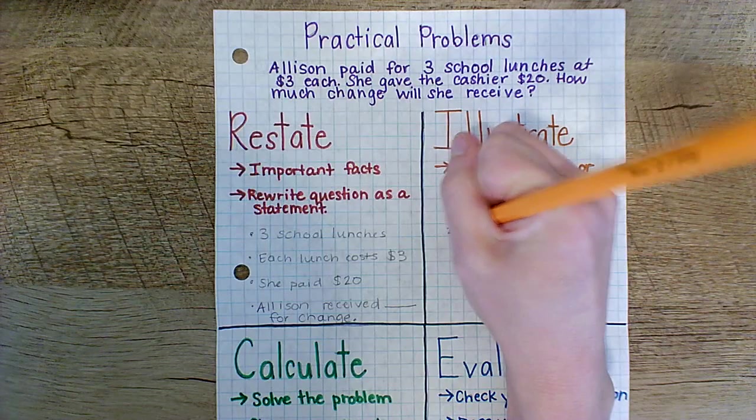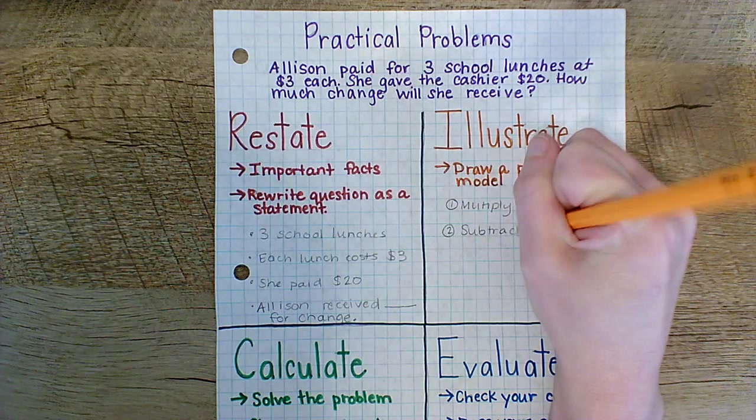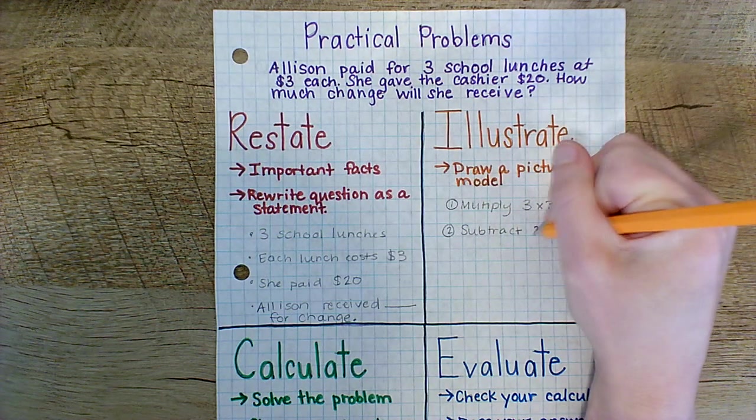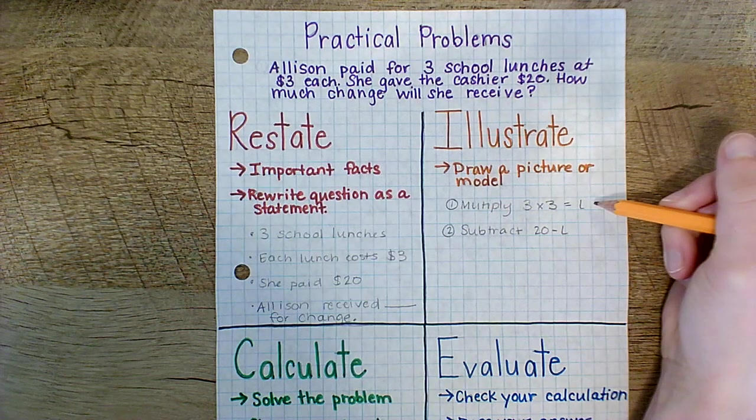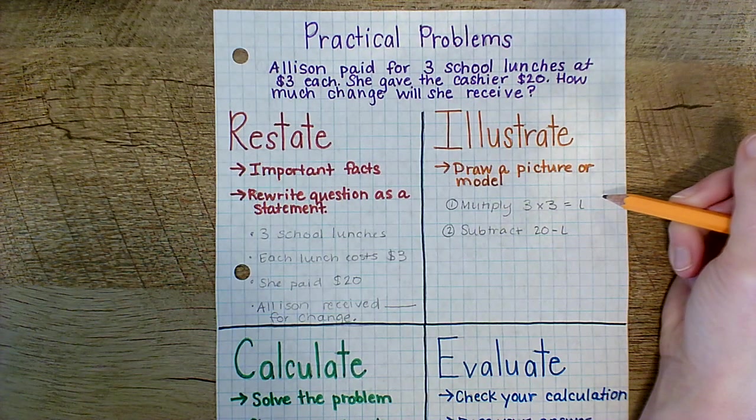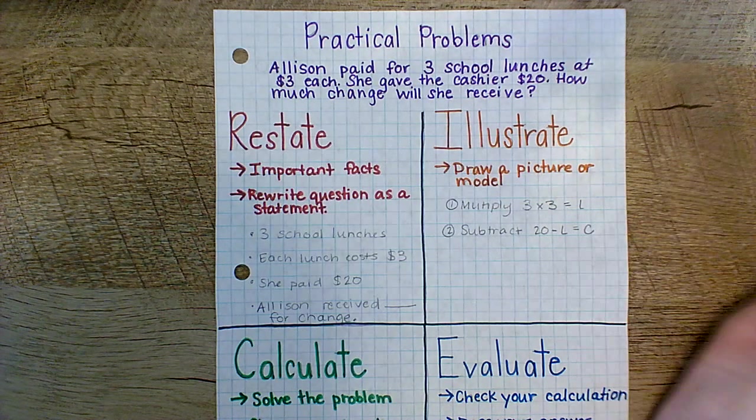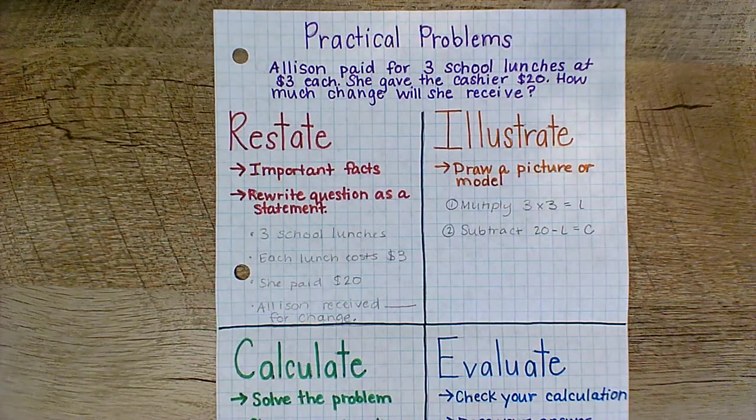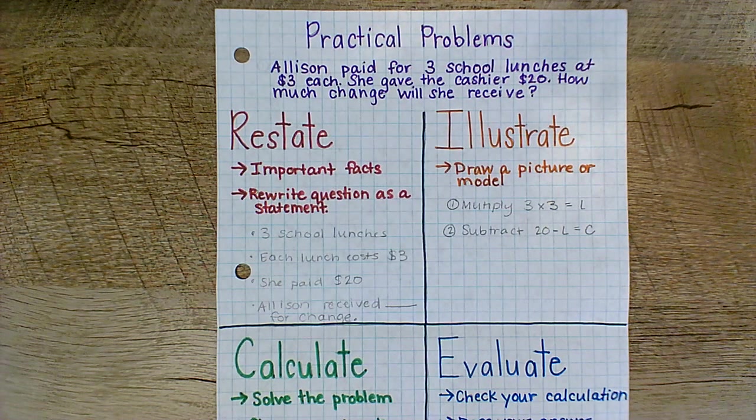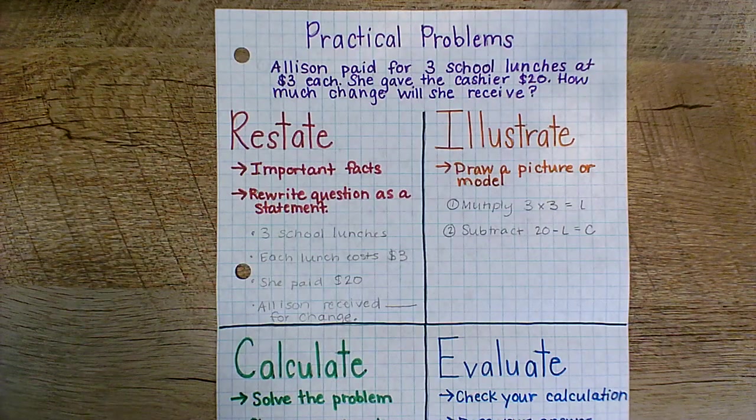Now my second step is going to use subtraction. So I'm going to subtract. We have twenty minus L. Remember, we don't know what that value is yet because we haven't solved it. And I can give this a value of C for change. Now that I've identified that this problem uses two steps, I can think about how can I illustrate and draw this as a picture or model.